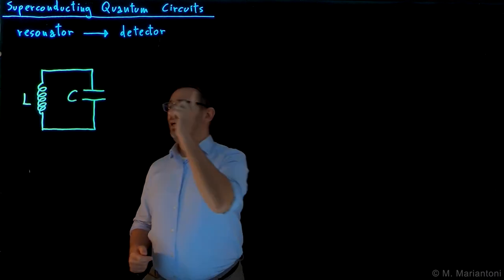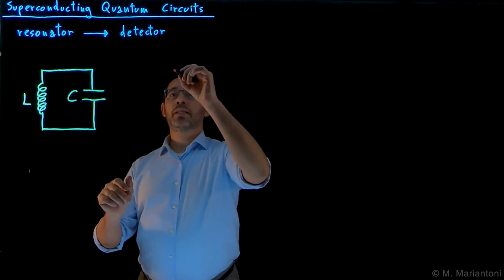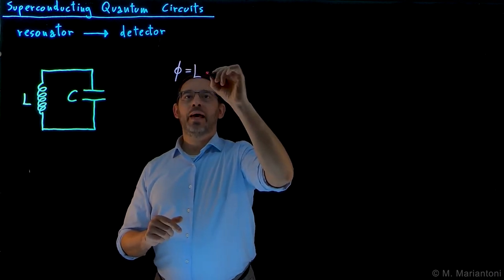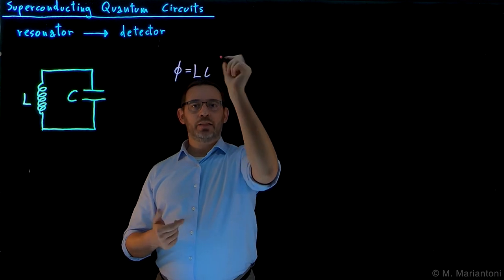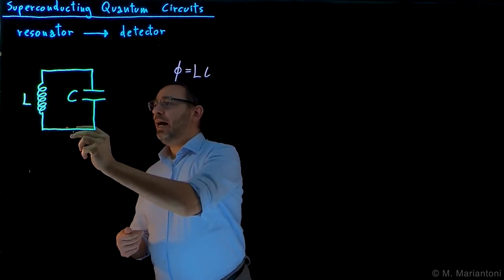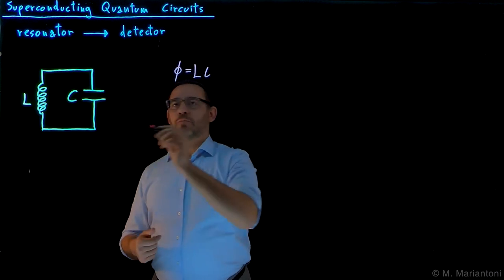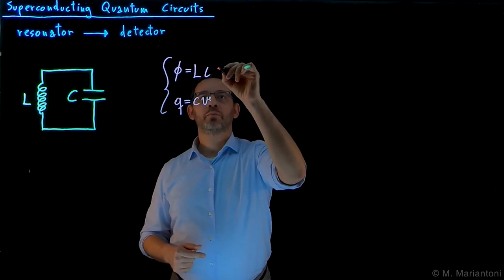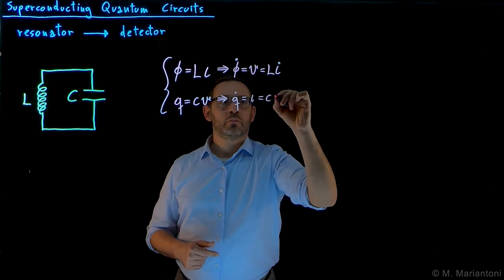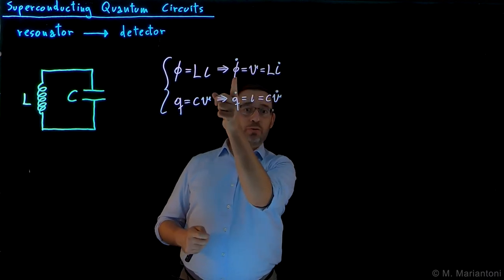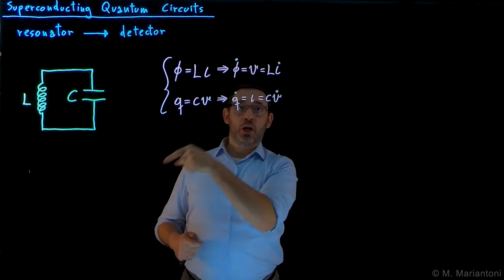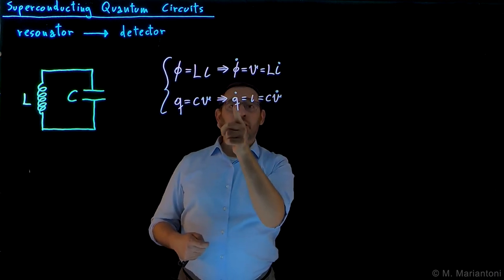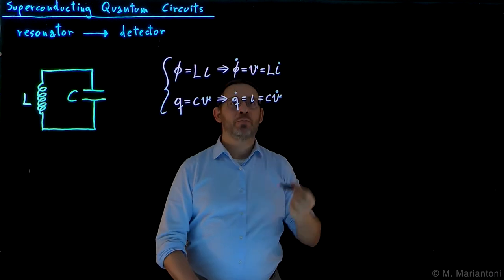The constitutive relations of an inductor and capacitor allow us to write the flux phi on the inductor as the inductance L times the current I dot, the dot will be used for time derivatives. The current I is the current flowing on inductor L. Similarly for the capacitor. We can now simply derive with respect to time both these constitutive relations. We find that the derivative with respect to time of the flux, which by Faraday's law is nothing but the voltage drop over the inductor, is equal to LI dot. And similarly for the capacitor, q dot, which is the current on the capacitor, is equal to CV dot.